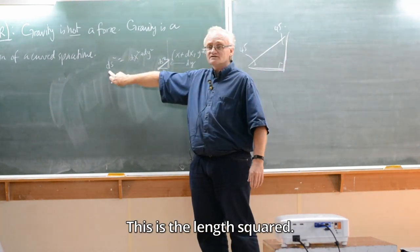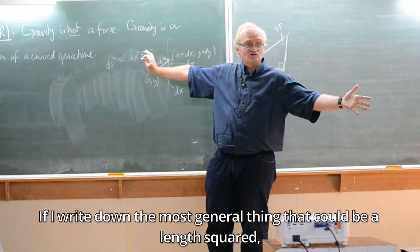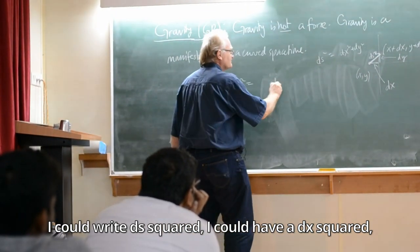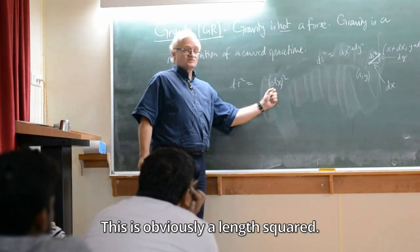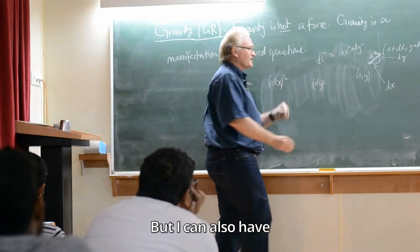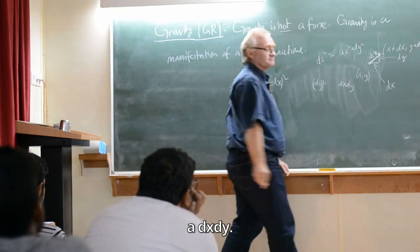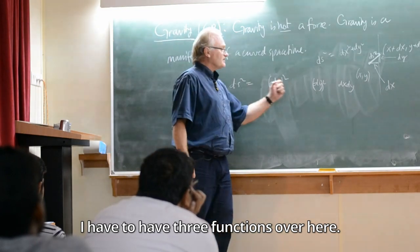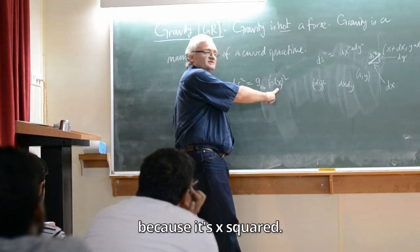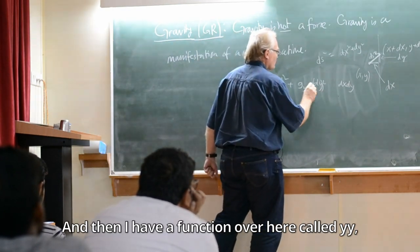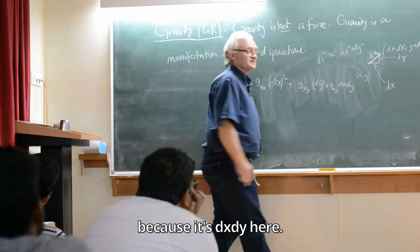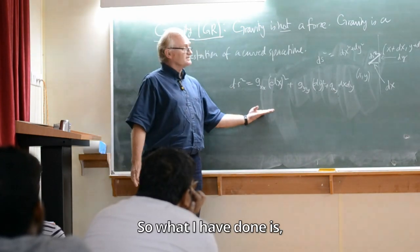If I write down the most general thing that could be a length squared, I could write ds². I could have a dx² - this is obviously a length squared. I could have a dy², that's obviously a length squared. But I could also have a dx dy, right? And I could have three functions over here. So I could have a function that I'm going to call g_xx because it's x squared. I'm going to have a function over here that I call g_yy because it's y squared. And I'm going to have a function over here that I'll call g_xy because it's dx dy sitting here. So what I've done is I looked at this formula over here, which was Pythagoras.